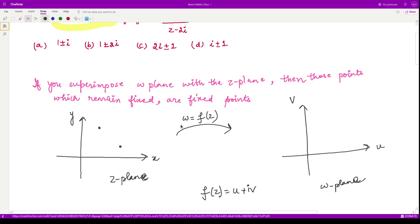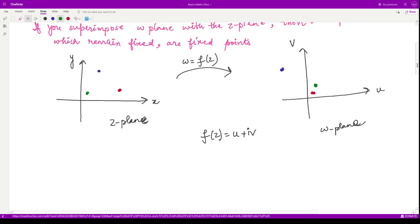Suppose this point after transformation moves here, and the other point moves here, and suppose we have this third point which is lying here. After transformation, this point goes to the same position and these two points shift to different positions. This is our first point moving to this position, and this is our second point moving to this position.